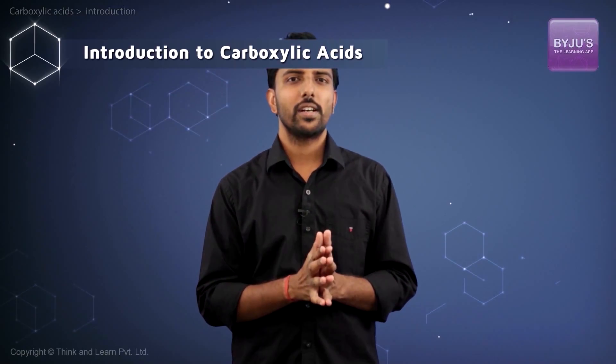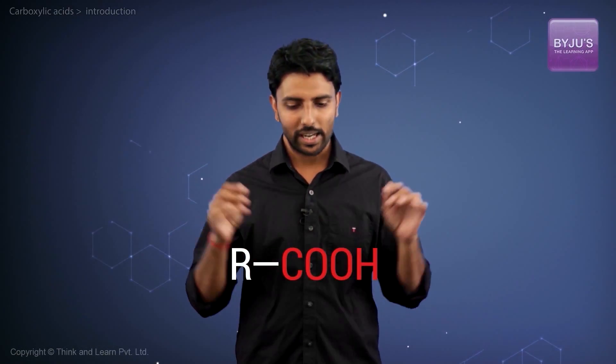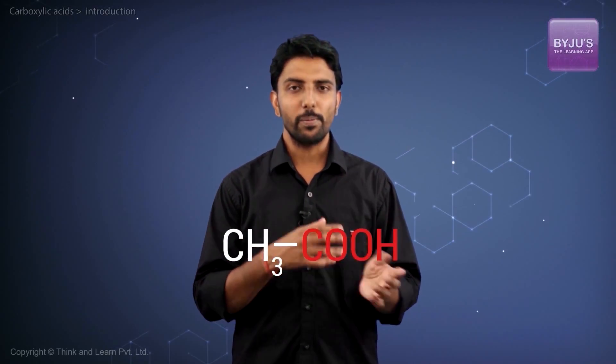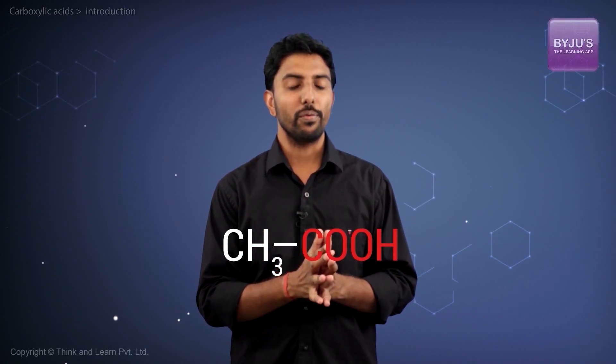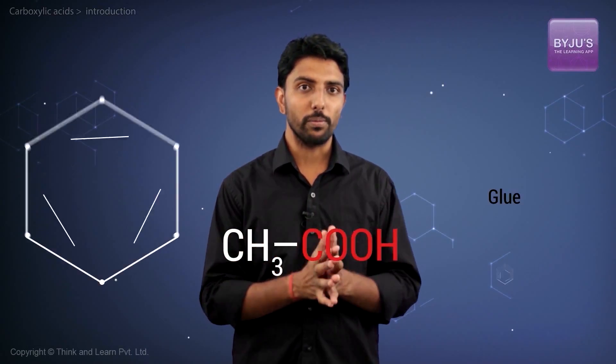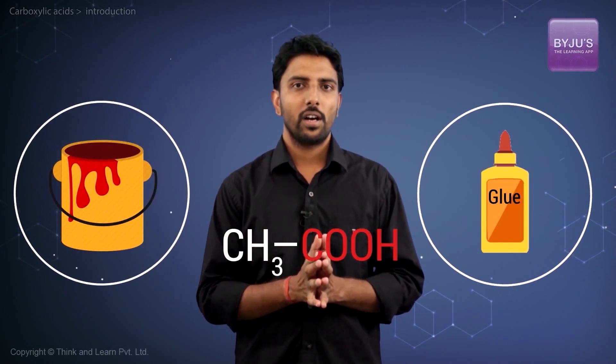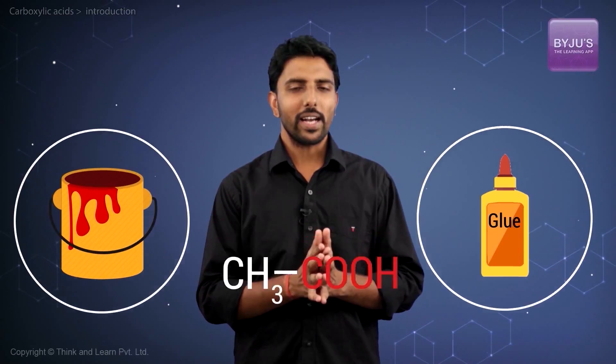Our focus is going to be on carboxylic acids, i.e. compounds that have this group. The most widely used acid is acetic acid, which is mainly used in the formation of vinyl acetate polymer used in paints and adhesives. We'll study acids, their physical properties and chemical properties in detail in this chapter.